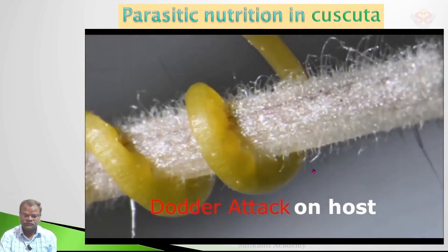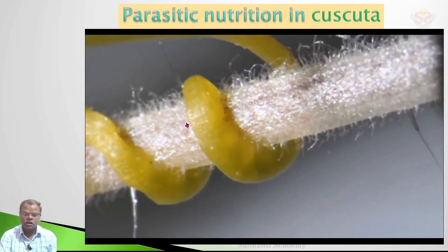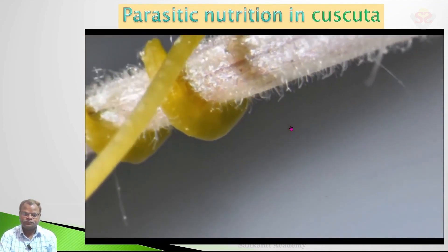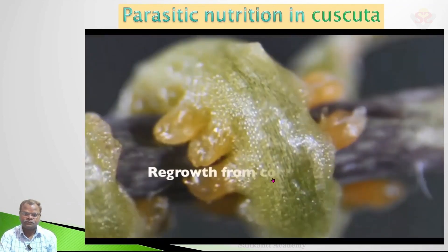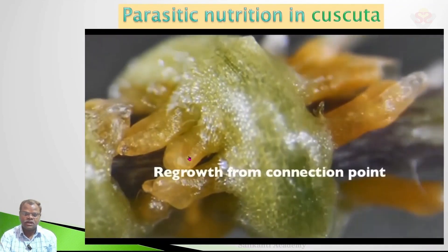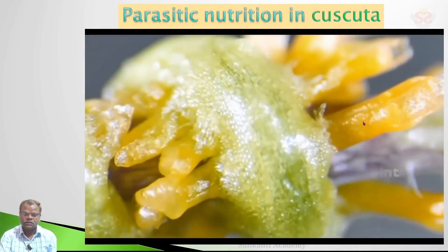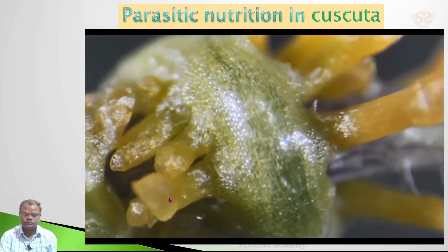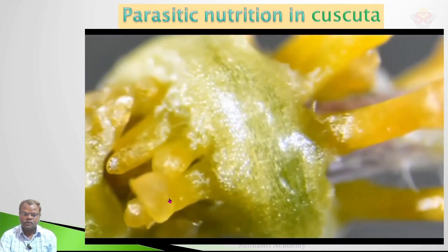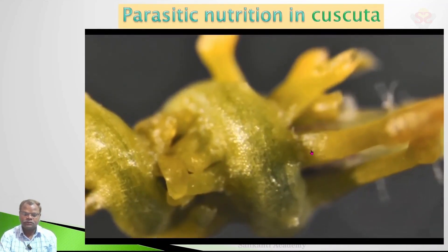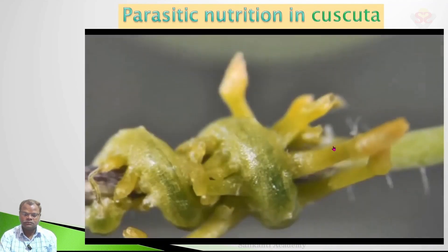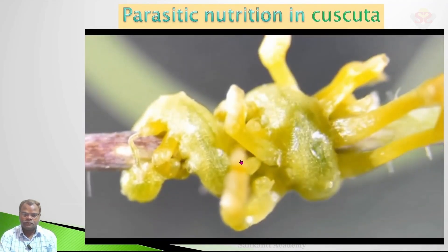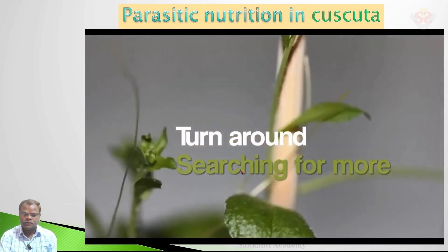This Cuscuta is also called the daughter's plant. These are the haustoria of Cuscuta, which penetrate into the stem of the host.